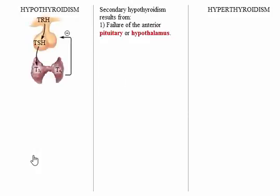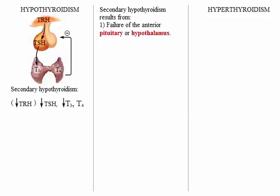Secondary hypothyroidism results from failure of the anterior pituitary or hypothalamus. In this condition, when thyroid-stimulating hormone, and possibly also thyrotropin-releasing hormone, levels are low, T3 and T4 levels diminish. Because TSH levels are low, secondary hypothyroidism will not be associated with enlargement of the thyroid gland. Click Continue to see a summary of hypothyroidism.